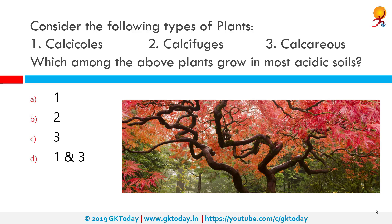Among calcicols, calcifuges, and calcareous plants, which among them grow in the most acidic soil? Calcifuges grow in the most acidic soil. It is a plant that does not tolerate alkaline soil. The word is derived from Latin meaning 'to flee from chalk,' because chalk is alkaline.